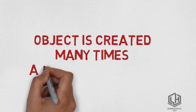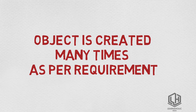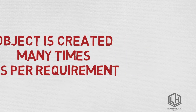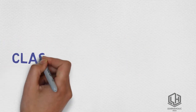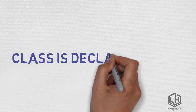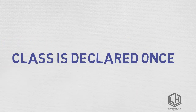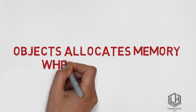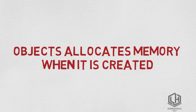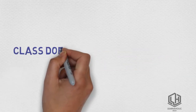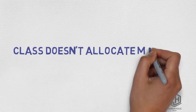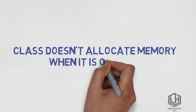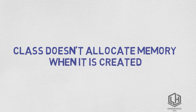Fifth: object is created many times as per requirement, whereas class is declared once. Sixth point: object allocates memory when it is created, whereas class doesn't allocate memory when it is created.